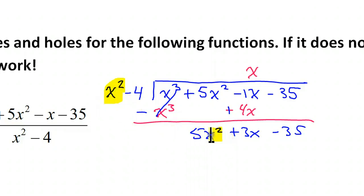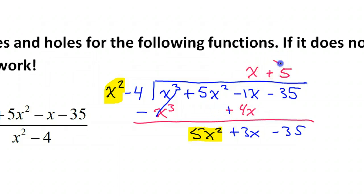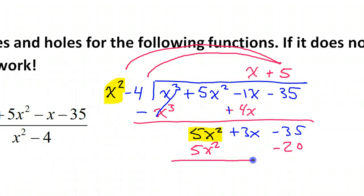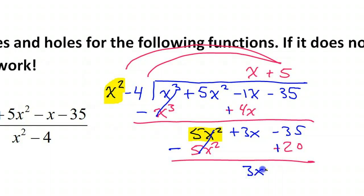We look at the x squared and now the five x squared, and we ask ourselves the same question: x squared times what will give me five x squared? Clearly, that is five. Then I take that five and do the distributive property. Five times x squared is indeed five x squared. Five times negative four is negative twenty. Line up your like terms. Subtract by changing the signs — these cancel. Three x comes down, and this is going to be negative fifteen.